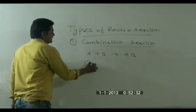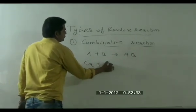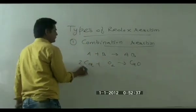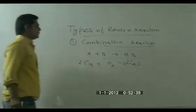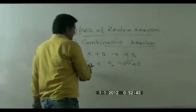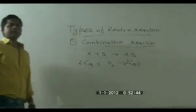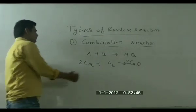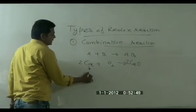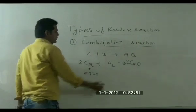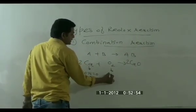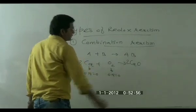Suppose we have calcium plus O₂ giving CaO. For balancing we have 2CaO. Now let us see on the oxidation number basis. Calcium is a free element, so its oxidation number is zero. Oxygen is a homoatomic molecule, so its oxidation number is also equal to zero for homoatomic molecules.